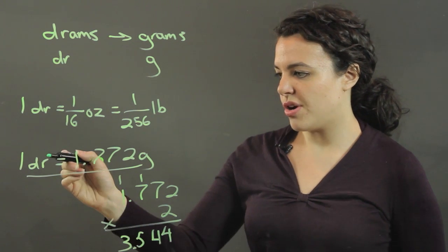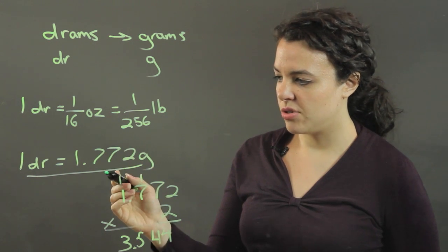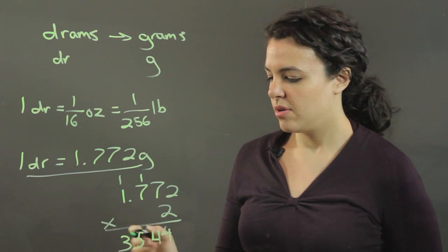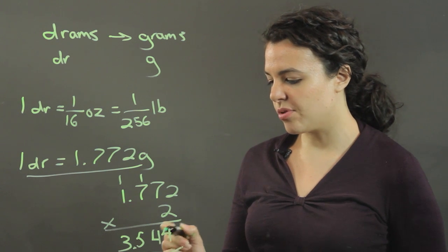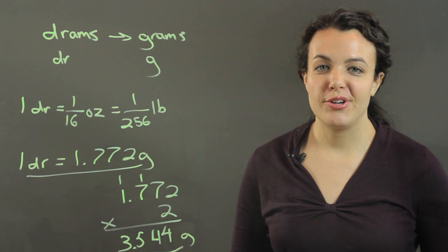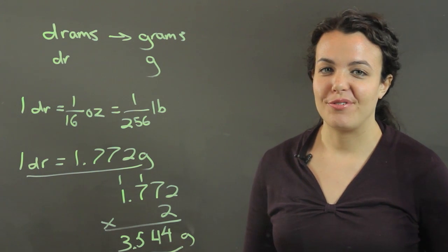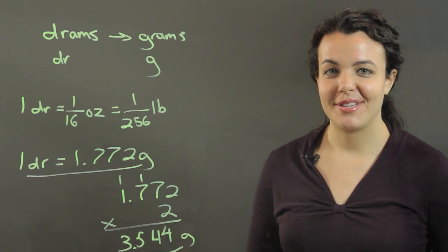So 2 drams is 1.772 multiplied by 2, which comes out to 3.544 grams. Now you know what a dram is to begin with and you know how to convert from drams to grams. Thank you for watching.